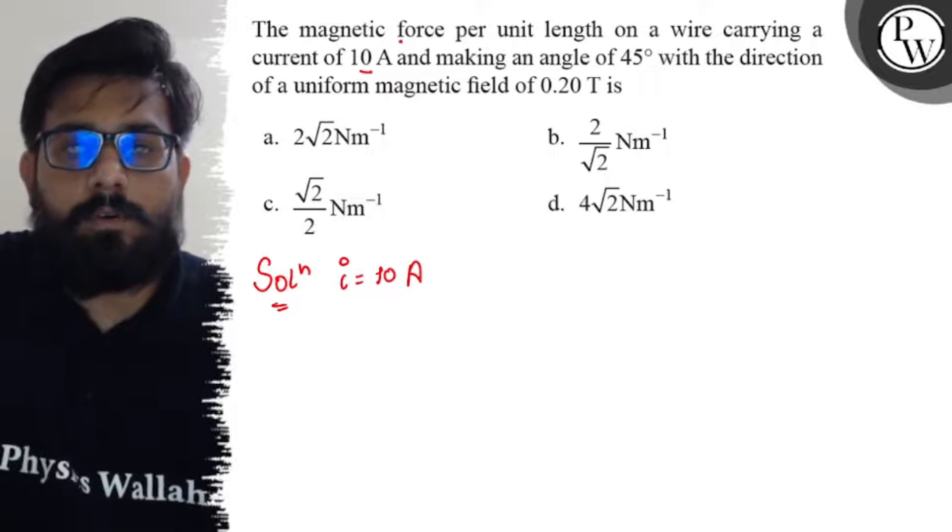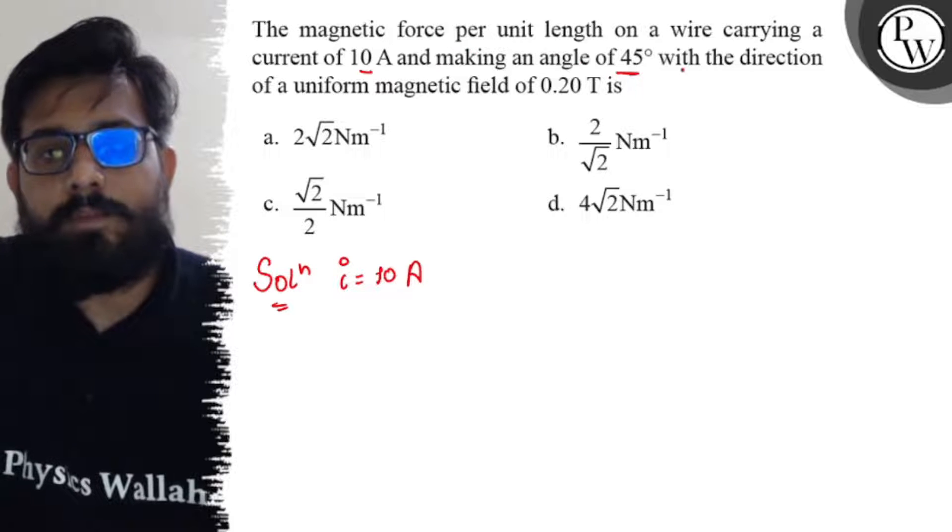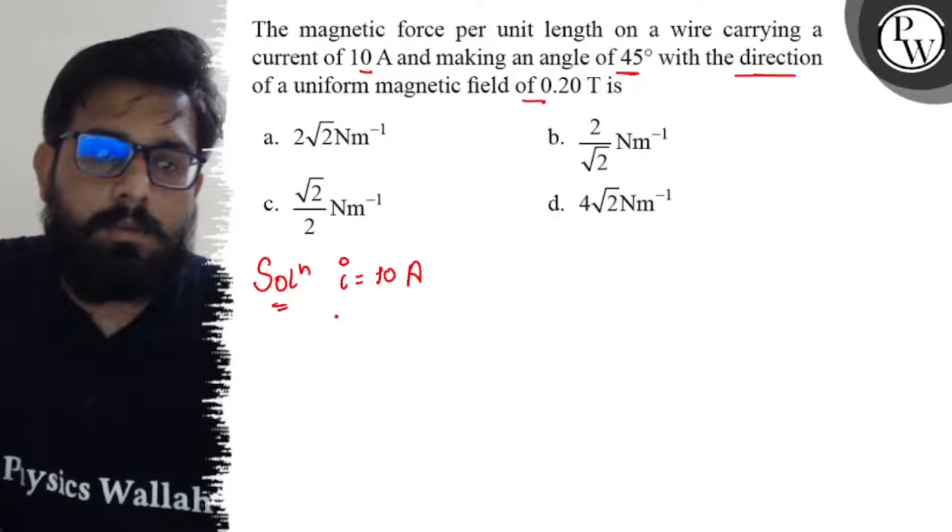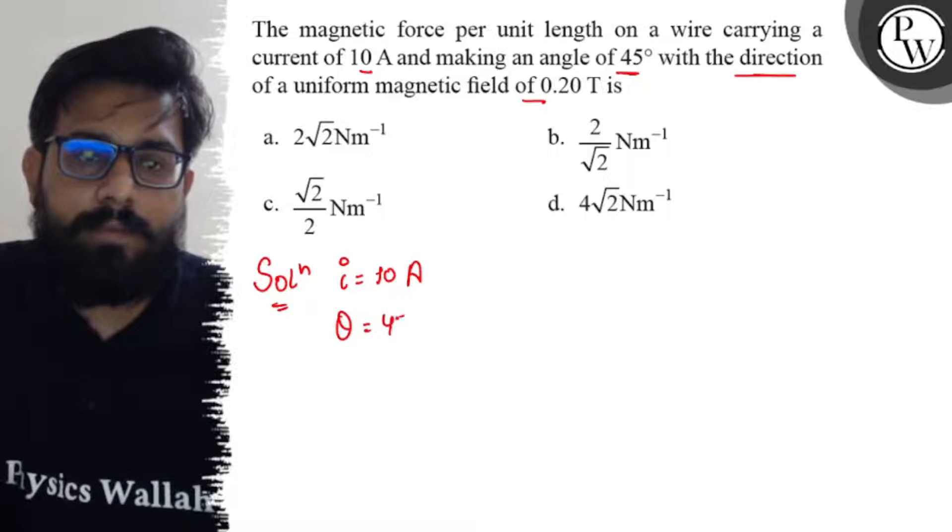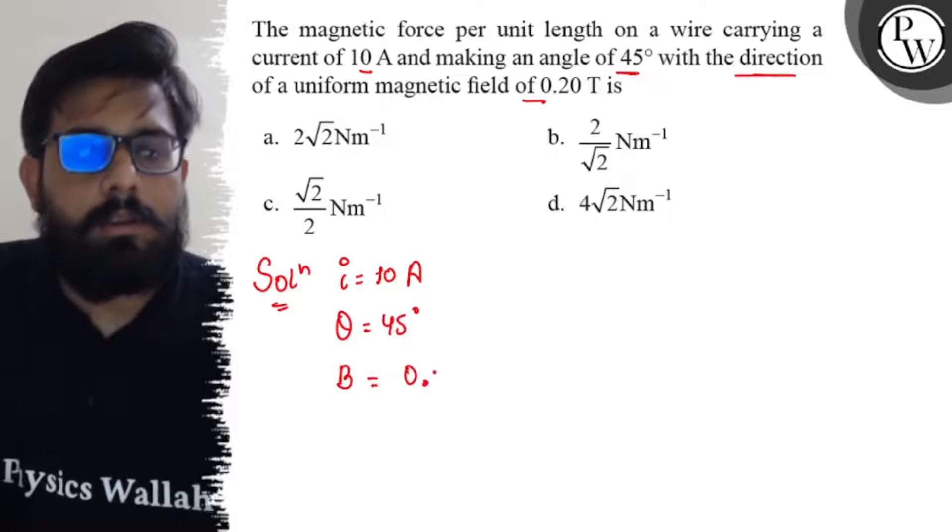Also it is given that the force is making an angle of 45 degree with the direction of the uniform magnetic field. So theta is also given as 45 degree and the value of magnetic field is given as 0.2 tesla.